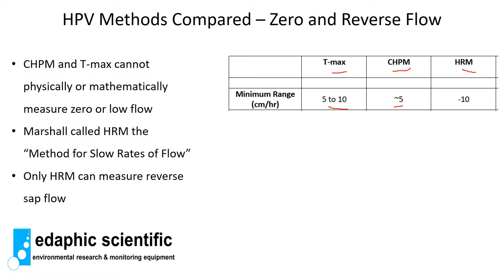The heat ratio method, on the other hand, can measure down to negative 10 centimeters per hour. So the heat ratio method — whether it be the Marshall-Burgess or the Marshall-Hogg method — can measure reverse, zero, and slow rates of sap flow. Whereas the Tmax and compensation heat pulse methods cannot mathematically and physically measure zero or slow rates of flow, and they certainly cannot measure reverse flow.